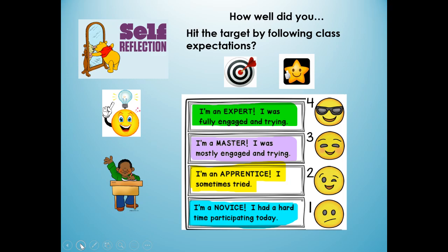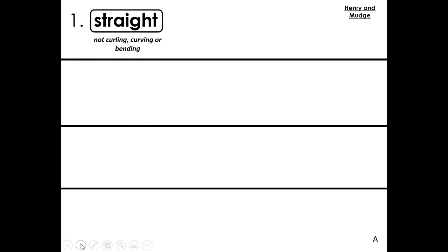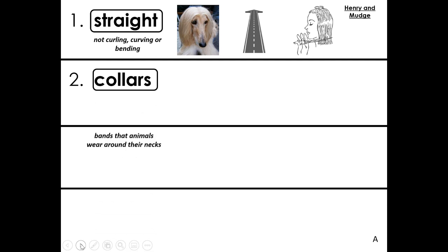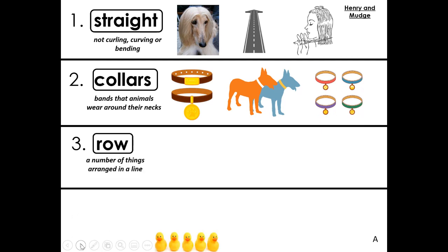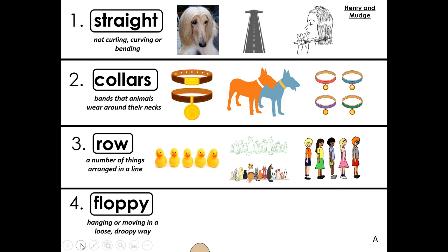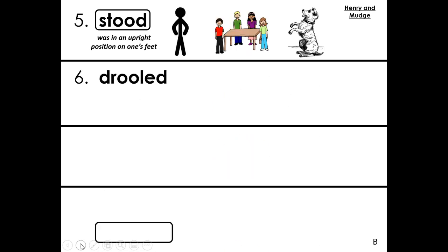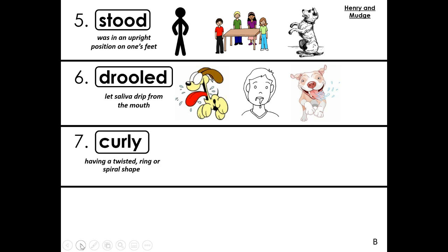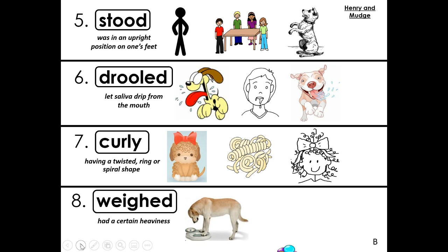Let's review — check your work. Number one: straight — not curling, curving, or bending. Number two: collars — bands that animals wear around their necks. Number three: row — a number of things arranged in a line. Number four: floppy — hanging or moving in a loose, droopy way. Number five: stood — was in an upright position on one's feet. Number six: drooled — saliva dripped from the mouth. Number seven: curly — having a twisted, ring, or spiral shape. Number eight: weighed — had a certain heaviness.